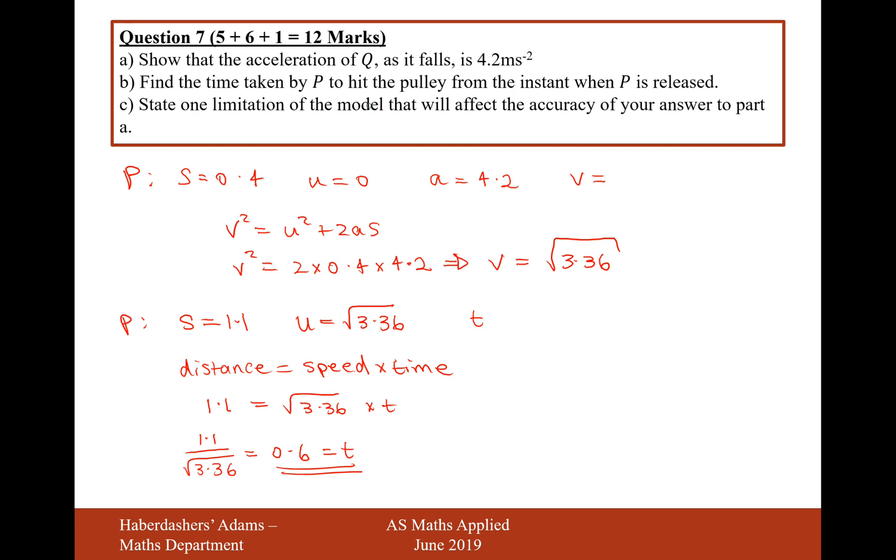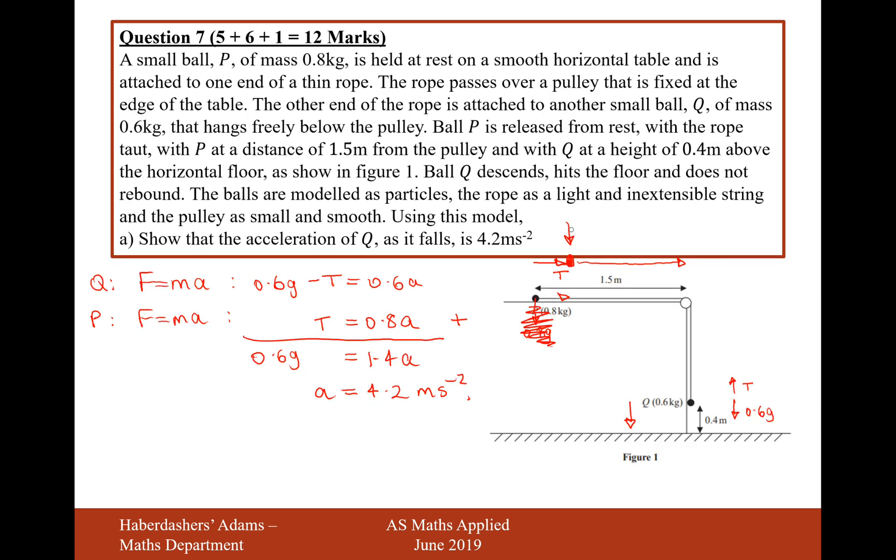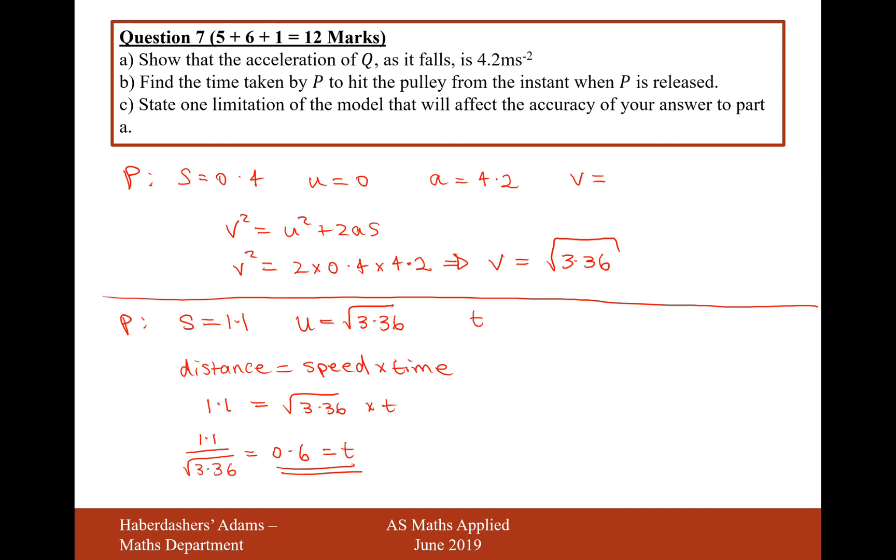But hold on, we want to find the total time taken for P to hit the pulley system when P is released. So actually, that's the time from this point here to hit the pulley. But actually we've got some time before it's picked up that initial speed. So we need to do one further calculation to find T on this section here. So we'll just use the easiest one, V equals U plus AT. So it's going to be the square root of 3.36 divided by, well U is 0, so we're going to just divide by A which is 4.2, which is going to be square root of 3.36 divided by 4.2, and that gives us a value of 0.436.